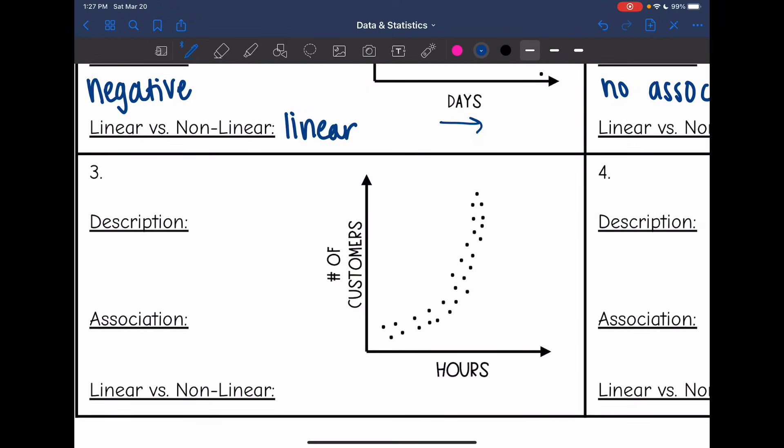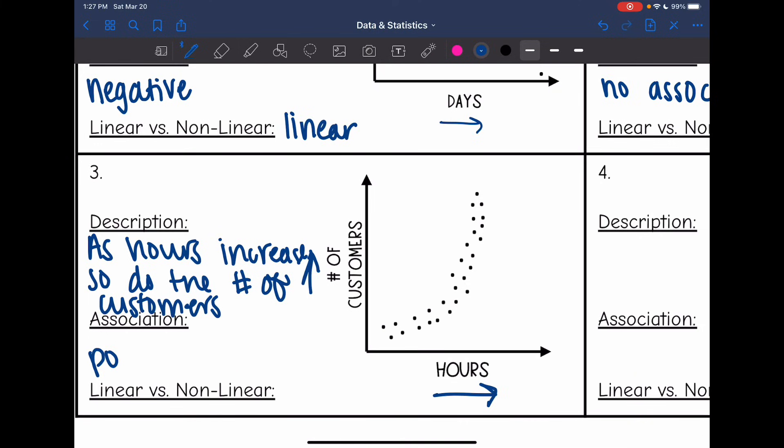This next one, as my hours increase, so do the number of customers. That would be a positive association because both of my variables are going up. However, this one is pretty curved. That does not look like a line to me. So we would say that this one is non-linear.